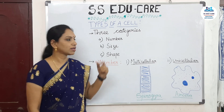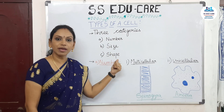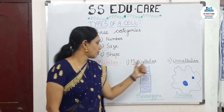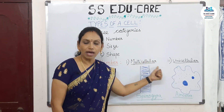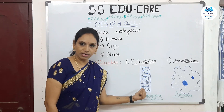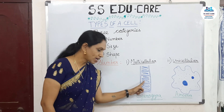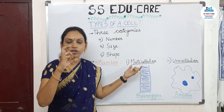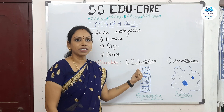Next we are going to discuss types of cells. Cells are divided based on three categories: their number, their size, and their shape. Based on number, cells are divided into two categories: multicellular and unicellular. Multi means many — the total body is made up of many cells. A simple example is Spirogyra. Looking at this diagram, each segment is one cell, making it a multicellular organism.